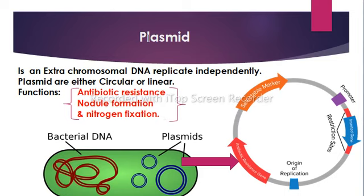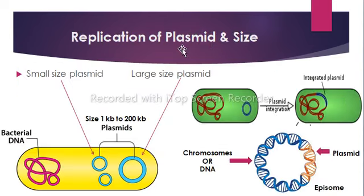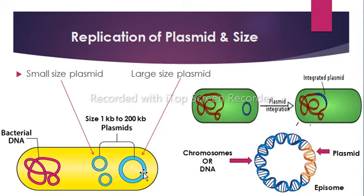The term plasmid was first introduced by American molecular biologist Joshua Lederberg in 1952. Regarding replication of plasmids and their size: plasmids use the host cell machinery for replication. Small-size plasmids use host cell machinery for replication, while large-size plasmids use their own enzymes for replication. Sometimes plasmids can integrate into chromosomes, and these are called episomes.